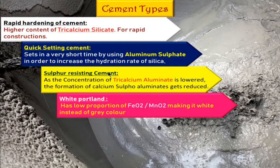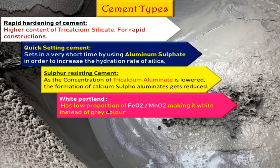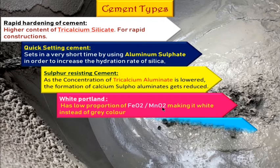Next, white Portland cement. The name tells you it gives a white color. Ordinary cement is greenish gray. White cement is made by decreasing the proportion of iron oxide or manganese oxide, making it white. It is used for decorative purposes, making swimming pools, or for traffic barriers.